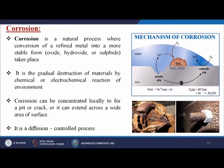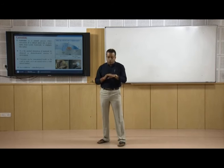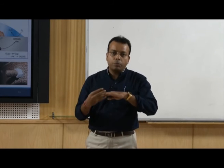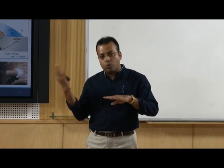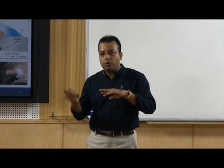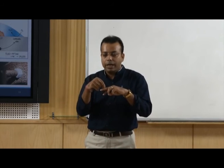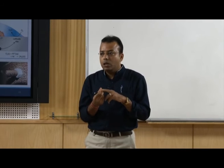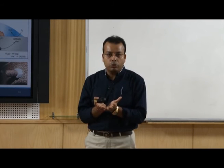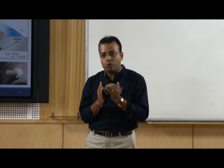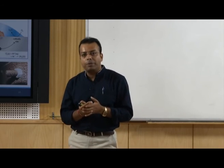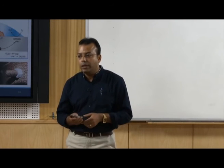Corrosion is the gradual destruction of materials by chemical or electrochemical reactions with the environment. Corrosion can be concentrated locally to form a pit or crack, or it can extend across a wide area of surface. It is a diffusion-controlled process — even if coatings are applied, after a certain time if the coating cracks, water molecules can go inside through the coating and react with the base metal, causing corrosion through the whole surface or through cracks and pores.